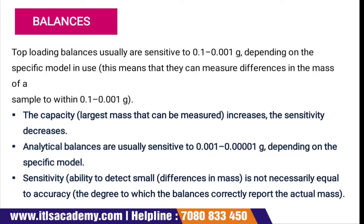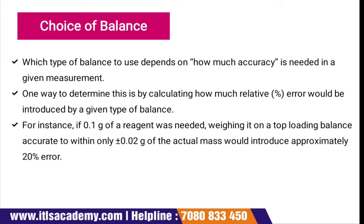Sensitivity means the ability to detect small differences, which is not necessarily equal to accuracy. The degree to which the balance correctly reports the actual mass is its accuracy. For choice of balance, one way to determine is by calculating how much relative percentage error would be introduced by a given type of balance. For example, if 0.1 gram of a reagent was needed, weighing it on a top loading balance accurate to within plus or minus 0.2 grams would introduce approximately 20% error.